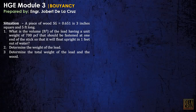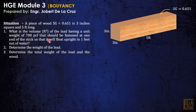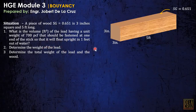A piece of wood with a specific gravity of 0.651 is 3 inches square and 5 feet long. For number 1, what is the volume in cubic feet of the lid having a unit weight of 700 pounds per cubic feet that should be fastened at one end of the stick so that it will float upright with 1 foot out of water?